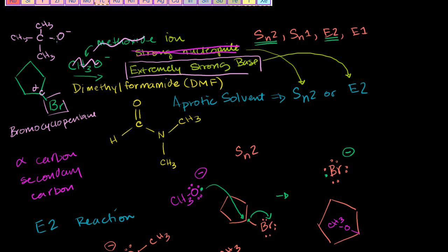So by making the base more bulky, or the thing that would act as a nucleophile more bulky, it is no longer a strong nucleophile. So it would no longer be good for an SN2 reaction. So just by changing the base a little bit, or the nucleophile a little bit, now this one would go strictly in the E2 direction.